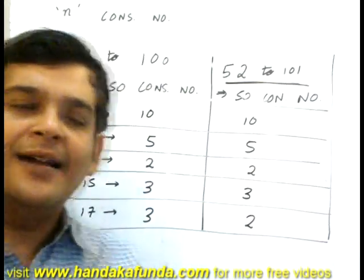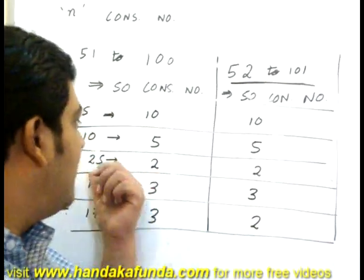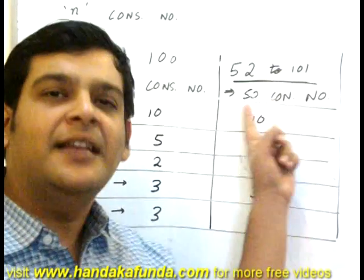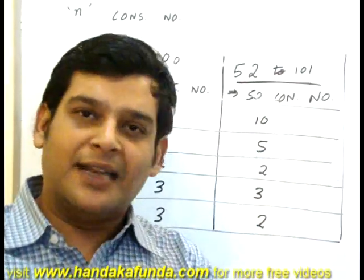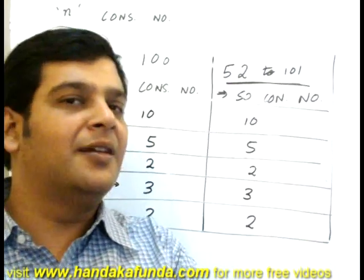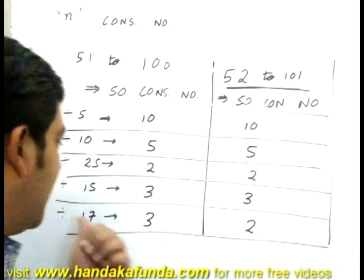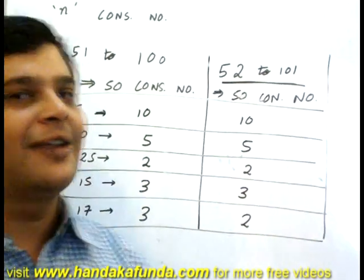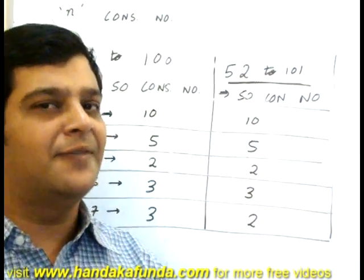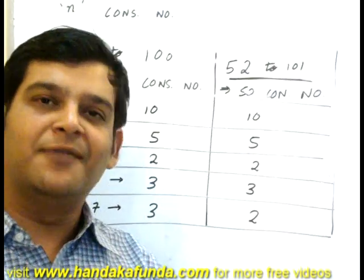So as a broad rule, if the divisor is a factor of the number of numbers available, you can directly calculate how many are divisible. But if it is not a factor, you need to find the first and last numbers divisible.